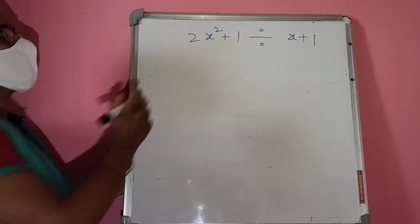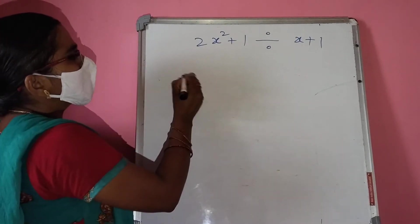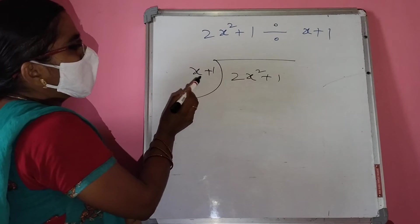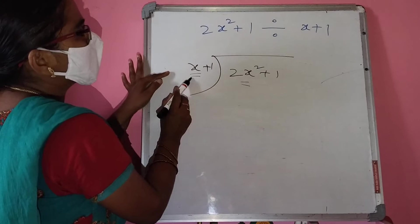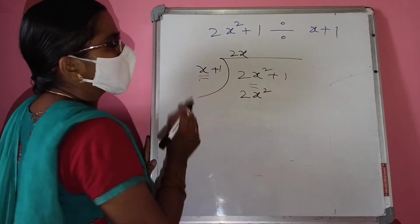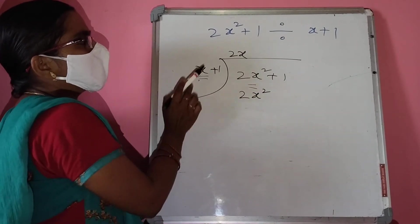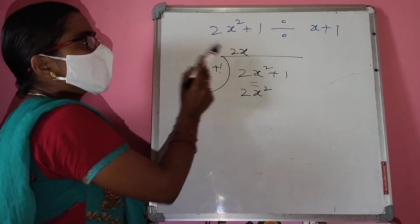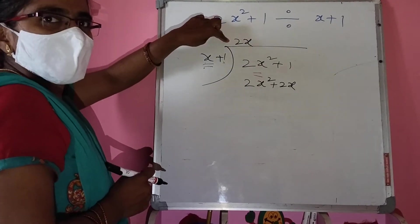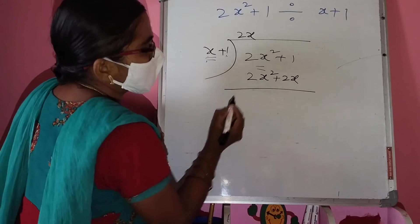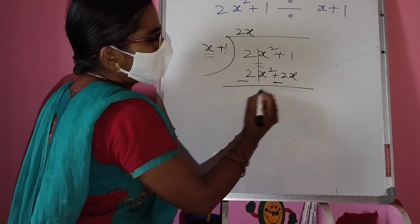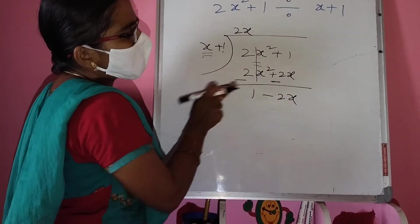Division of a polynomial — one polynomial dividing with another. Here, dividing 2x² + 1 by x + 1. We have x in the divisor and need 2x² in the dividend. Multiplying x by 2x gives 2x², and multiplying 1 by 2x gives 2x. So x + 1 times 2x gives 2x² + 2x. Subtracting from 2x² + 1: 2x² cancels, leaving 1 minus 2x.